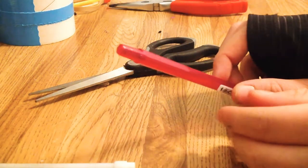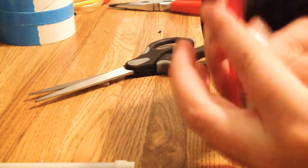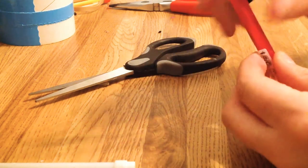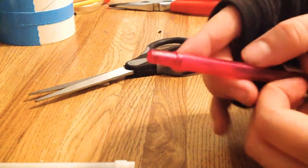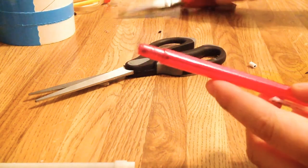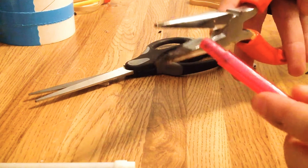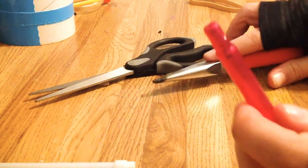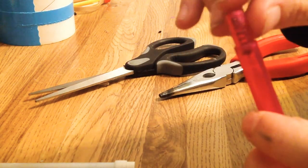And then what you're going to do with this is you want to keep the spring in there, so if the spring falls out, you're going to want to get a new pencil. So what you want to do is you want to cut off this little part right here.